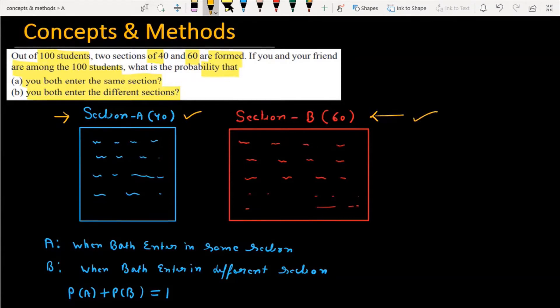Now, you and your friend, you can consider random students. Let's assume these students are X and Y. I have to ask two questions. The first question is when both enter the same section. So we have to find out the probability of both events. Let A be the event when both enter in the same section and B another event when both enter in different sections.